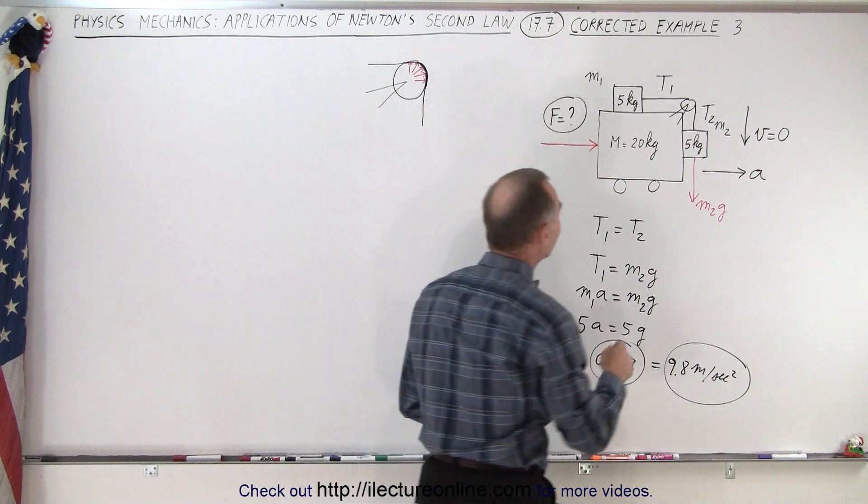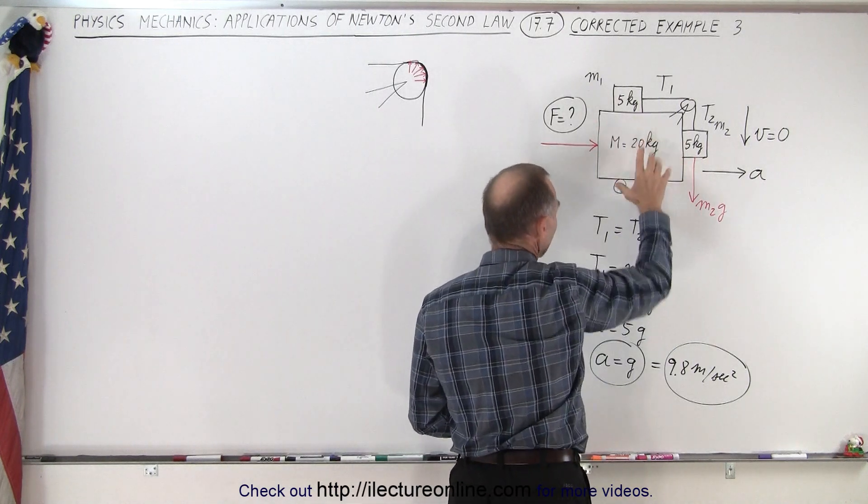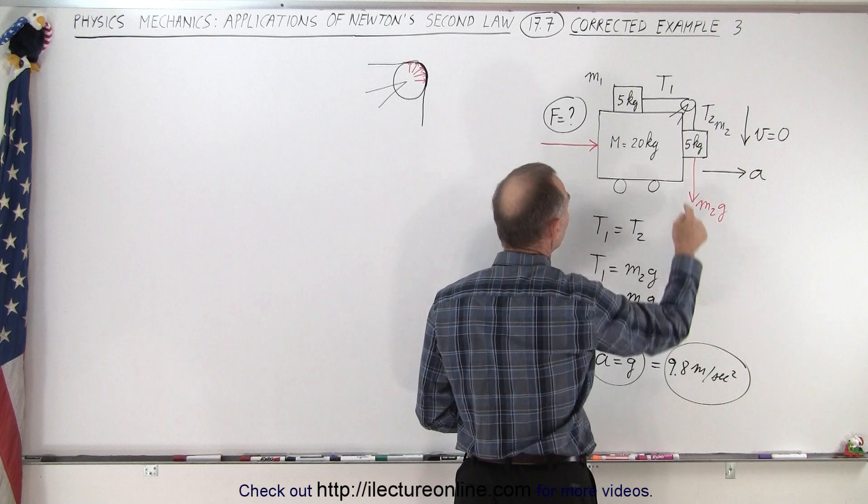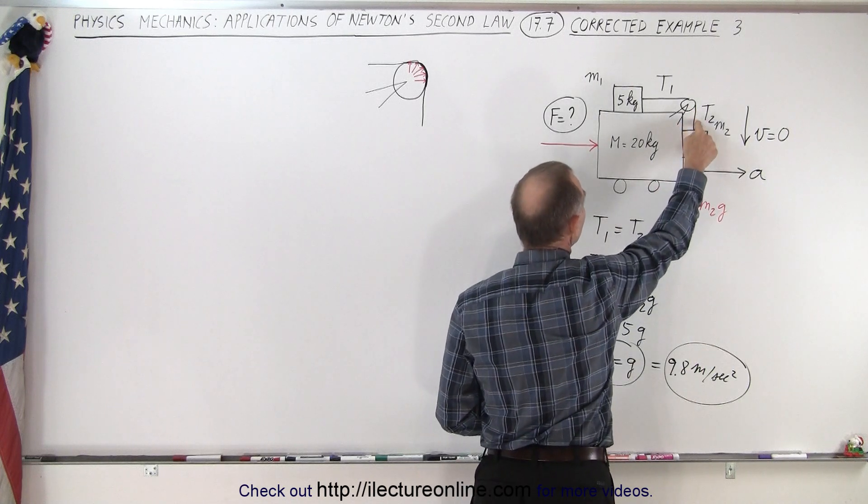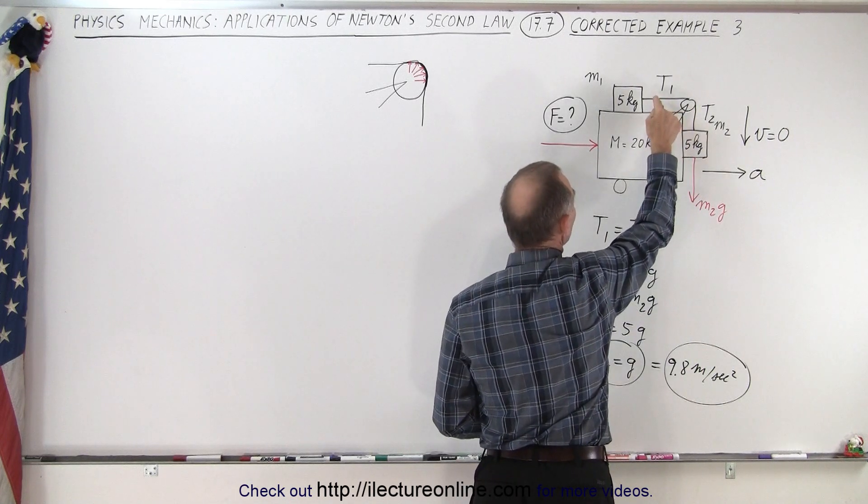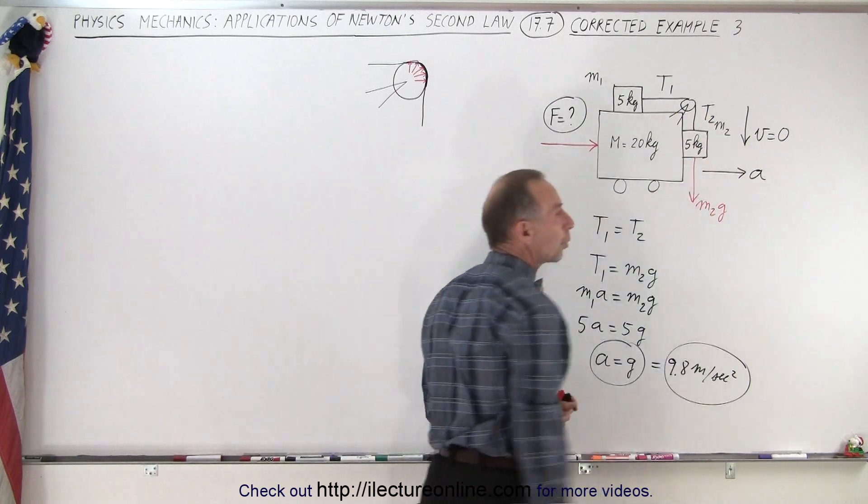So if we accelerate this whole object at 9.8 meters per second squared, it will produce enough tension here, and enough tension here to keep this mass from going down.